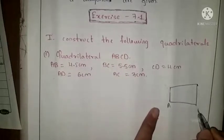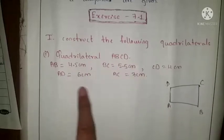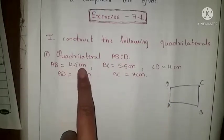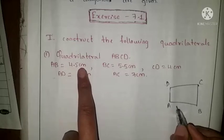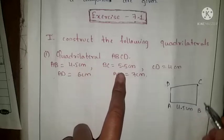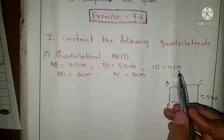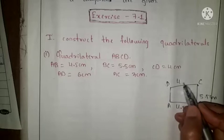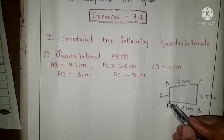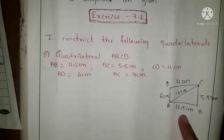Label the vertices A, B, C, D. Whatever measurements are given in the question, you should put them in this figure. AB = 4.5 cm, BC = 5.5 cm, CD = 4 cm, AD = 6 cm, and diagonal AC = 7 cm. So this is our rough sketch of the quadrilateral.